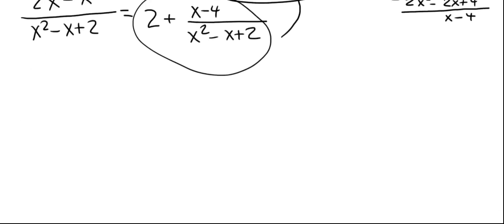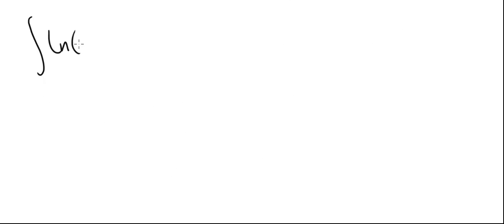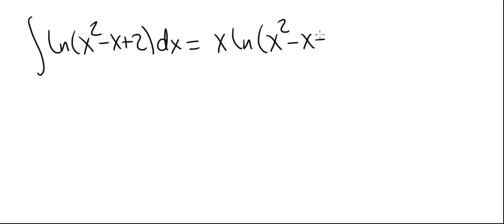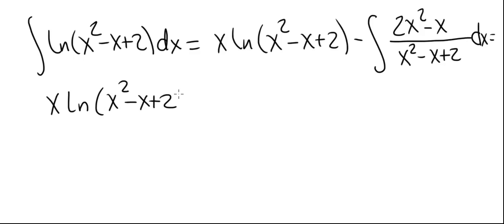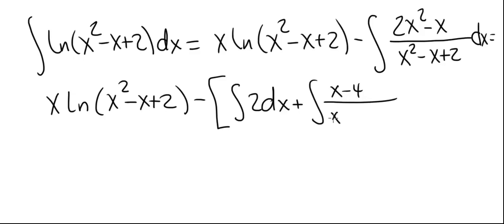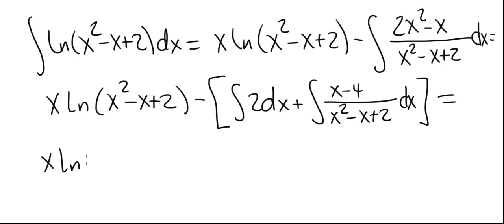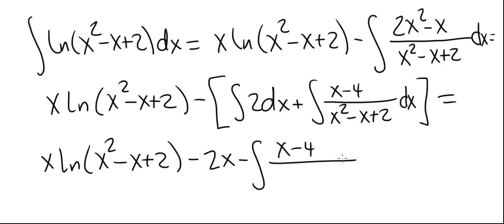Let's go back to the problem. The integral of natural log of x squared minus x plus 2 equals x times natural log of x squared minus x plus 2, minus the integral of 2x squared minus x over x squared minus x plus 2, which can now be expressed as x times natural log of x squared minus x plus 2, minus the integral of 2 dx, plus the integral of x minus 4 divided by x squared minus x plus 2 dx. The integral of 2 dx is just 2x, so we have x natural log of x squared minus x plus 2, minus 2x, minus the integral of x minus 4 over x squared minus x plus 2.